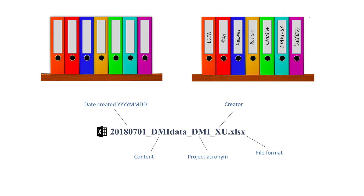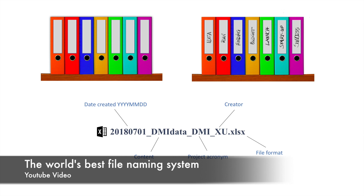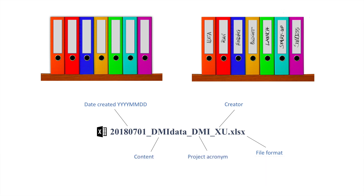Here is a practical file naming convention I usually follow. First is the date created — year, month, and day — because when files are sorted by title, it's easy to find what you want. Second is the content of the file. Third is the name of your project or subject. Last is your name, followed by the extension, which stands for the file format. If you're interested in this system, you can search on YouTube for 'the world's best file naming system' to learn more.